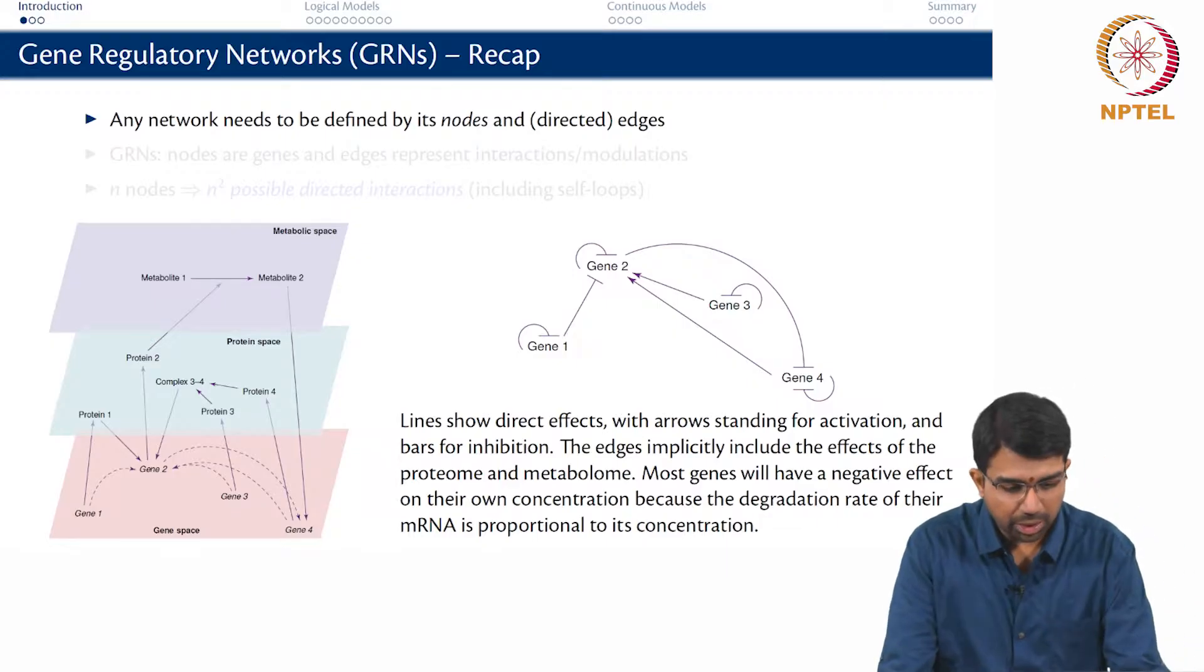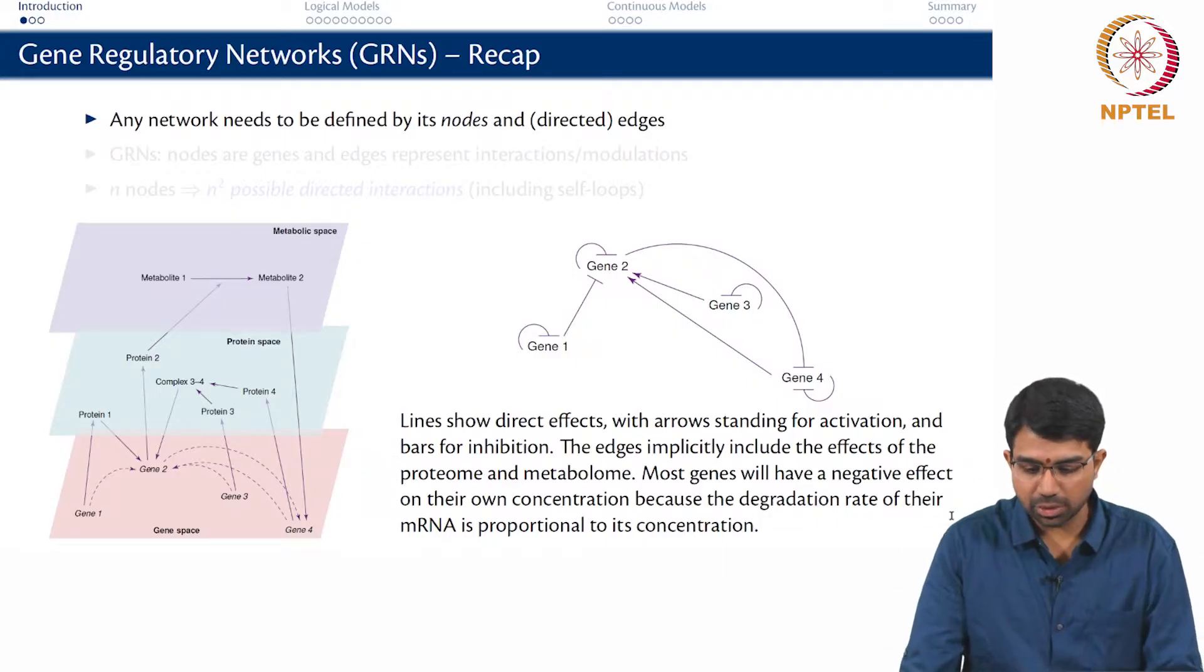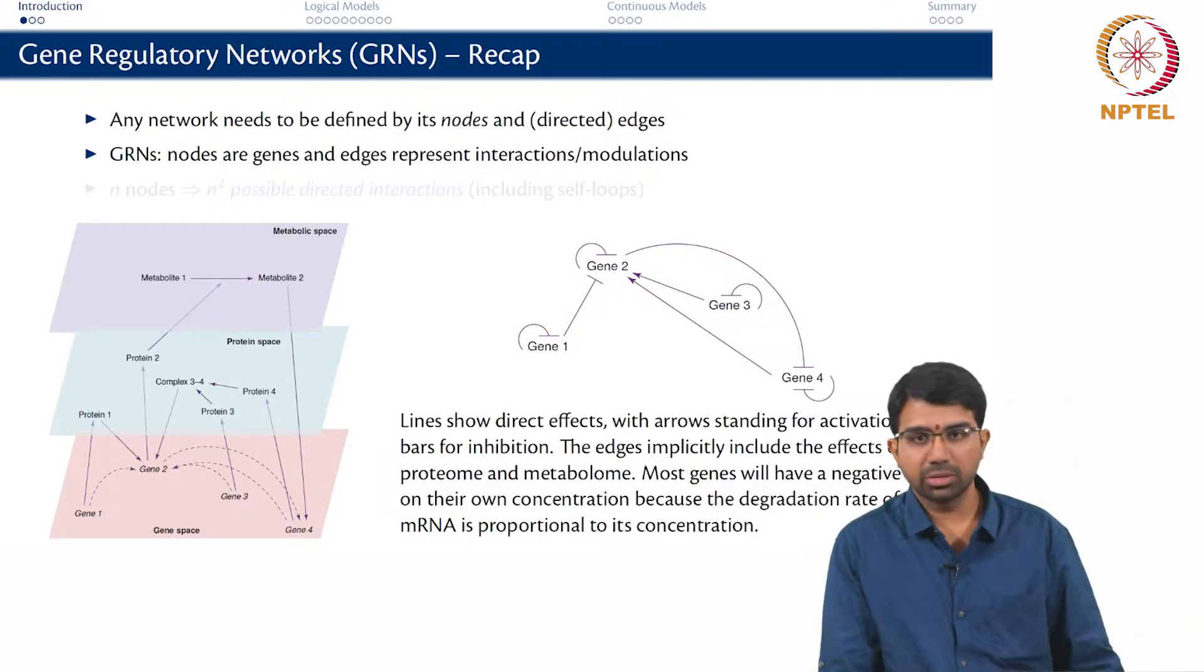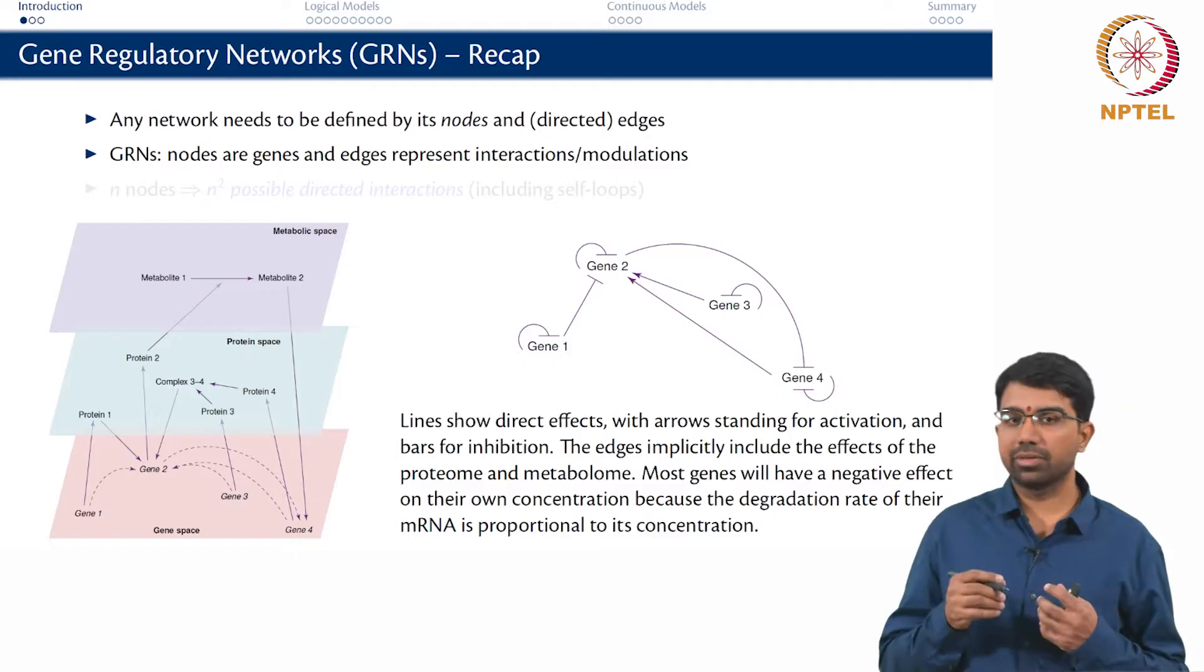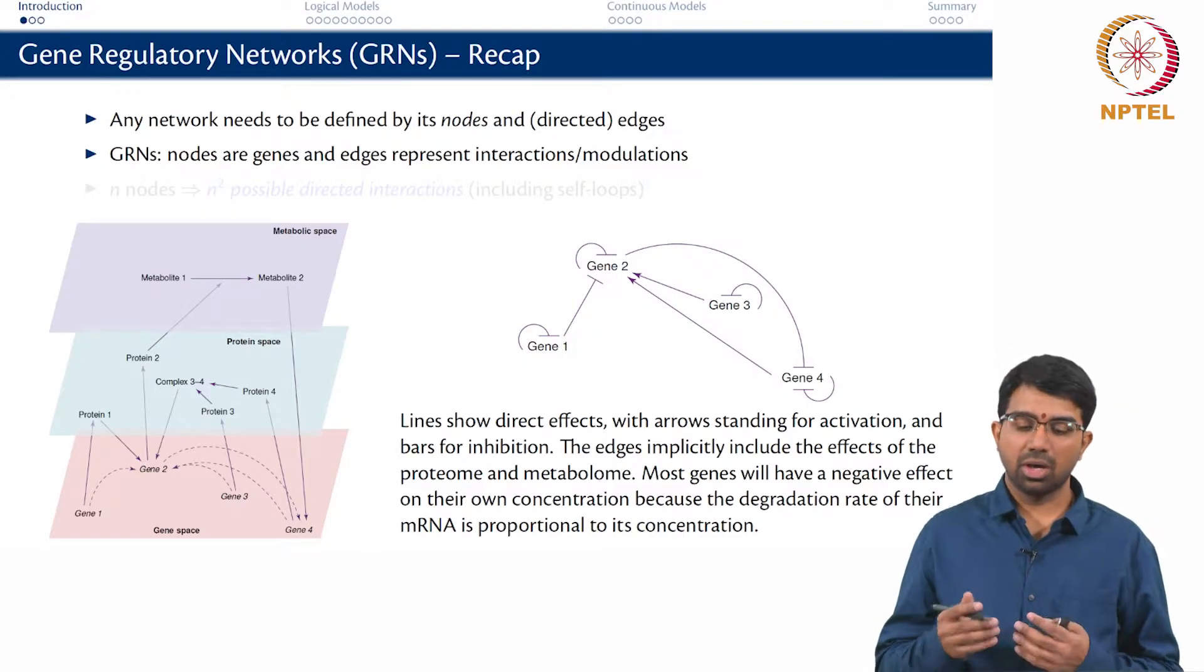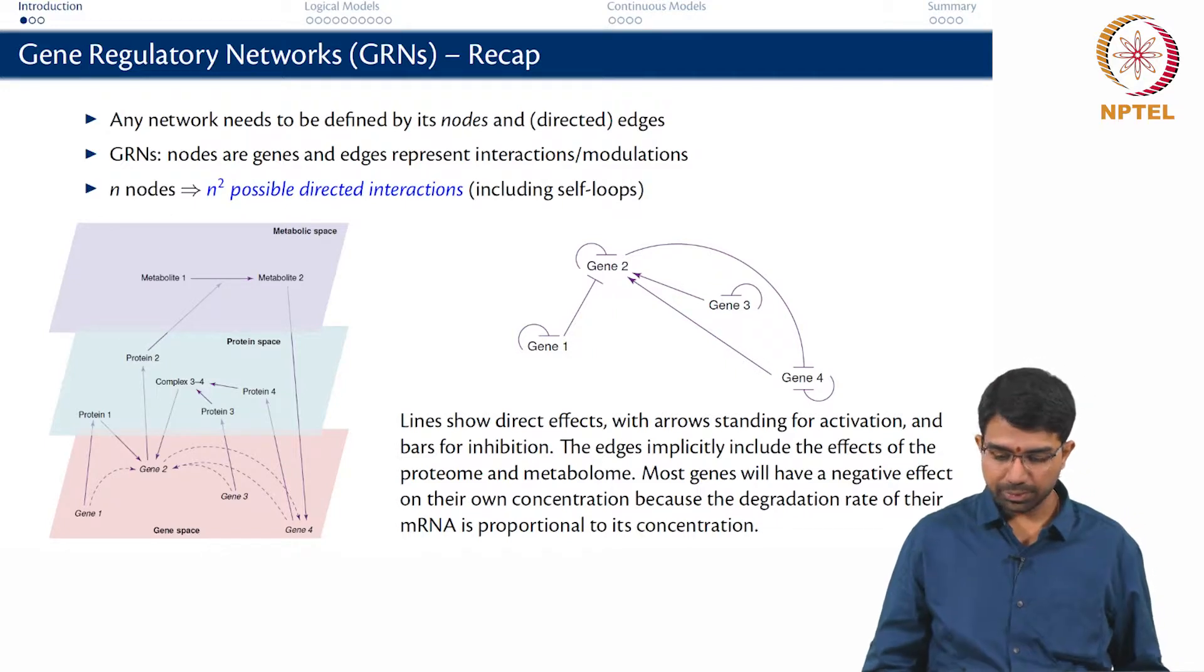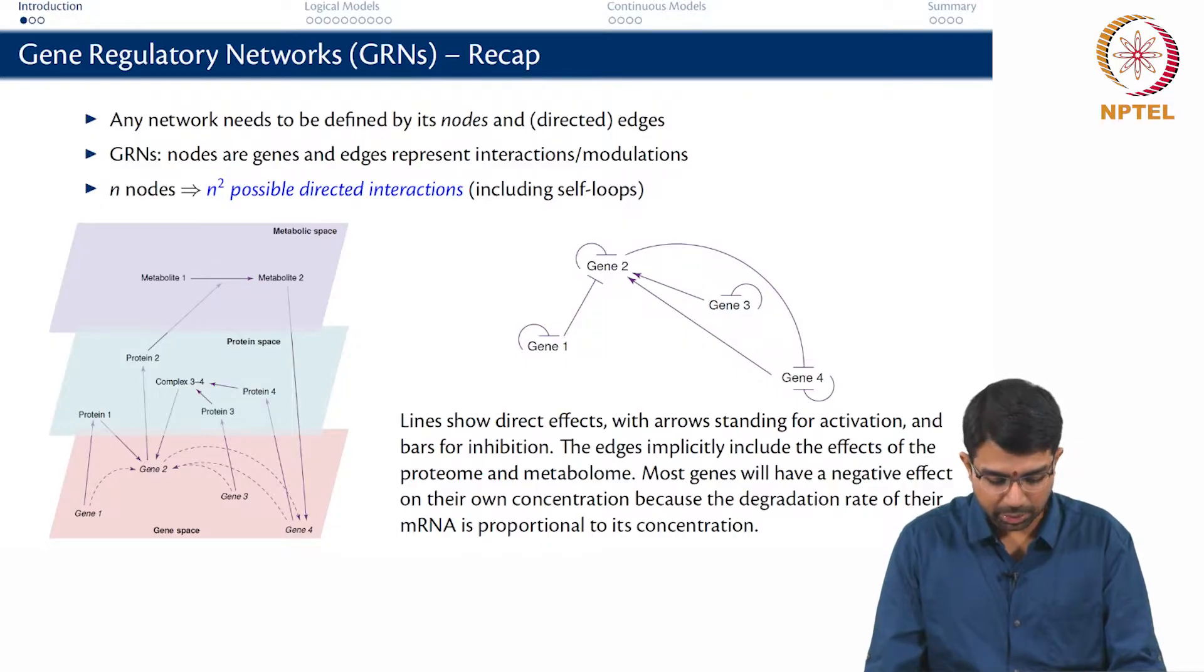So to recap, any network needs to be defined by its nodes and edges. In this case, we will have a directed network. So in a gene regulatory network, the nodes are genes and the edges represent interactions or modulations and you have directed interactions because a gene can repress another gene or a gene can activate another gene and you can also have self-loops.